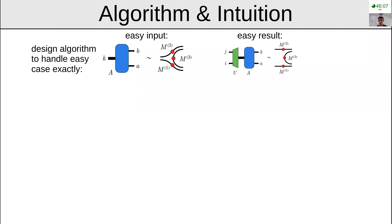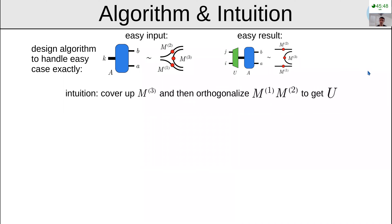But if you just give me an array of numbers, it's not easy to figure out the correct unitary U — it's only easy in picture form. The intuition is that there's an annoying matrix M3, and if M3 weren't there it'd be easier to orthogonalize the initial tensor to get the correct unitary U. So I first want to cover up M3 using a couple of vectors, leaving just M1 and M2, and then extract the unitary U via a Gram-Schmidt or QR decomposition.